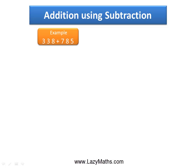Here is an example of addition using subtraction. 338 plus 785. In this case, we could either take 338 or we can take 785 and round them to its nearest number.